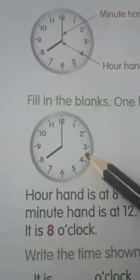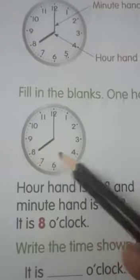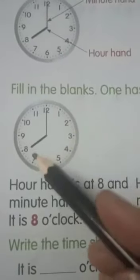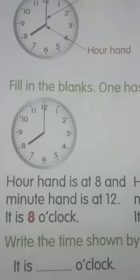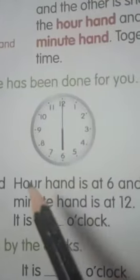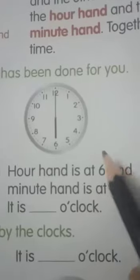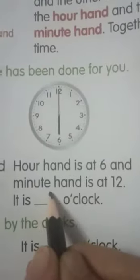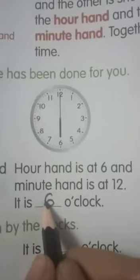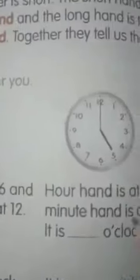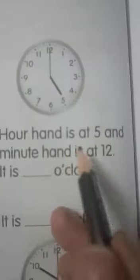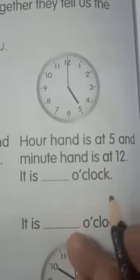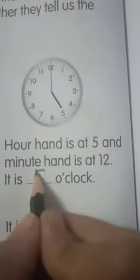Now, look at this. This hour hand is at 8 and this minute hand is at 12. It is 8 o'clock. This hour hand is at 6 and the minute hand is at 12. It is 6 o'clock. The hour hand is at 5 and the minute hand is at 12. It is 5 o'clock.